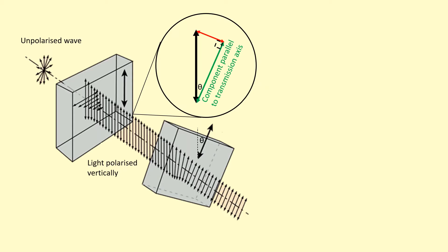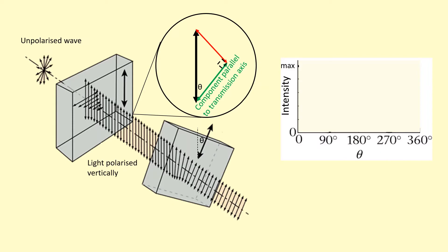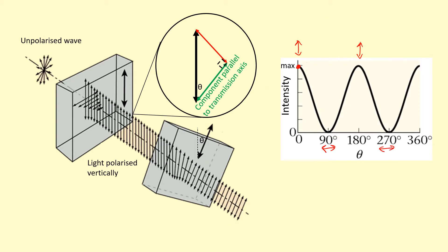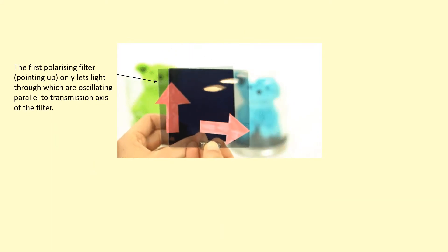If we spin the second polarizing filter and increase theta, the component coming through starts to decrease and eventually reaches zero at 90 degrees. When the two transmission axes are parallel, you get maximum intensity. When you spin to 90 degrees you get zero — none of the light goes through. Continuing past 90 degrees it goes back up to a maximum, and at 270 degrees you get no light again. This produces a cosine squared graph.